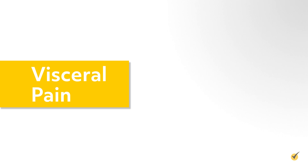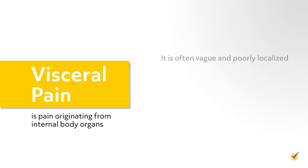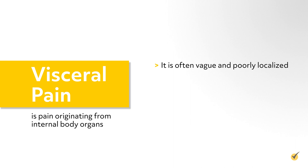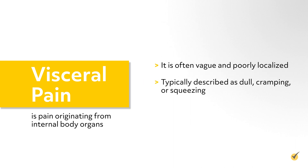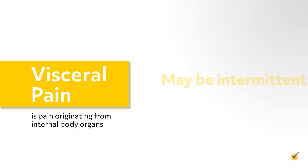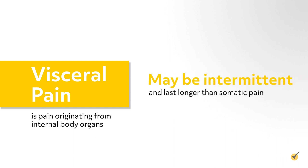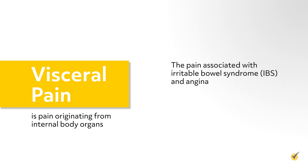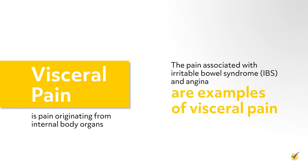Visceral pain is pain originating from internal body organs. It is often vague and poorly localized, typically described as dull, cramping, or squeezing, and may be referred to a distant superficial body structure. Visceral pain may be intermittent and last longer than somatic pain. The pain associated with irritable bowel syndrome, IBS, and angina are examples of visceral pain.